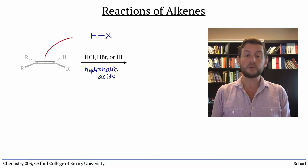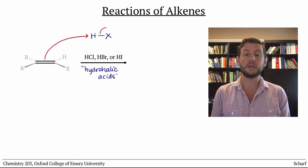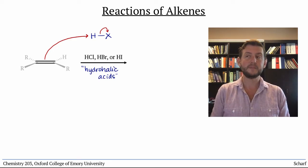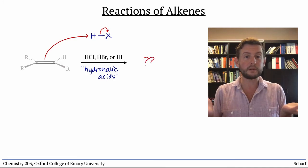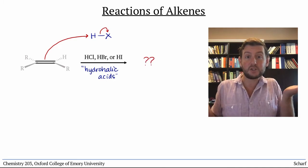The alkenes' donor orbital, pi cc, donates into sigma star Hx, grabbing onto the proton and kicking out x minus. But now, we're in a pickle. Where does that H go?